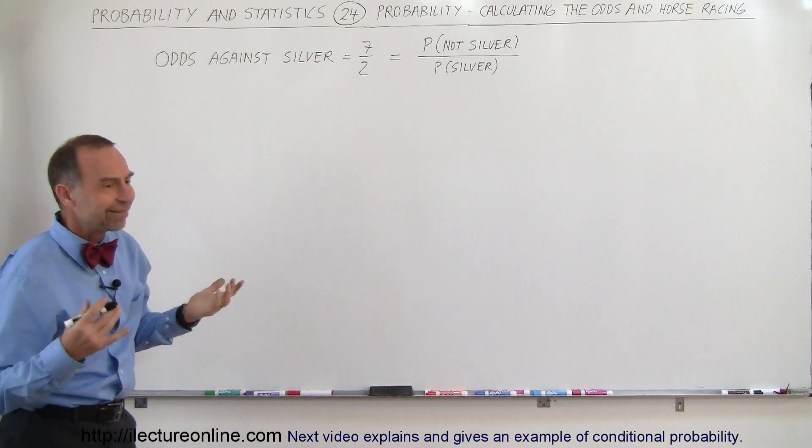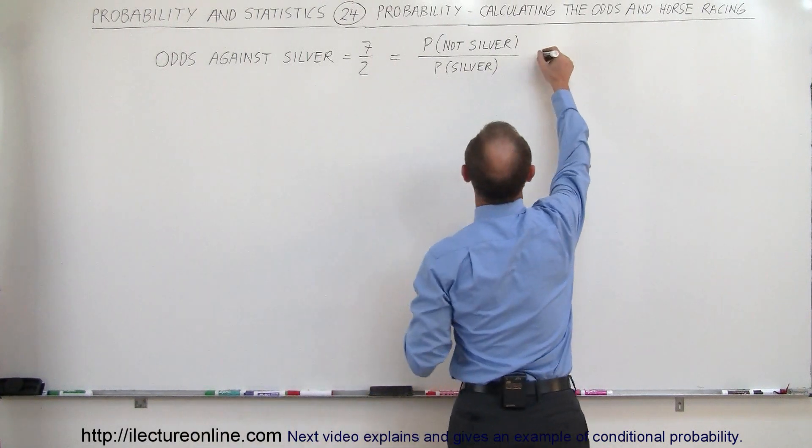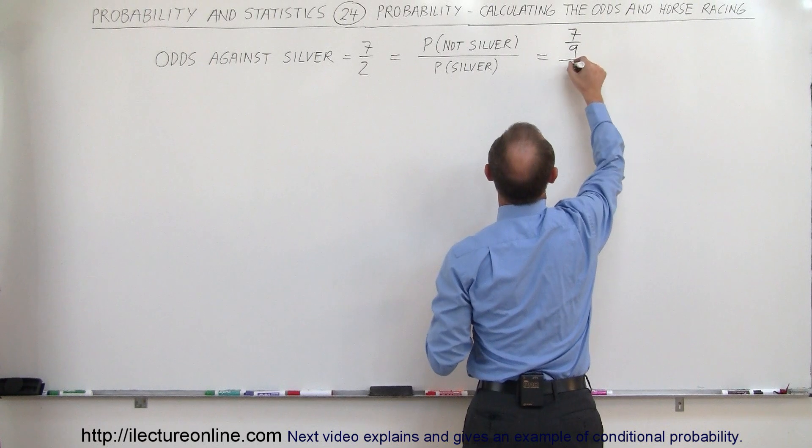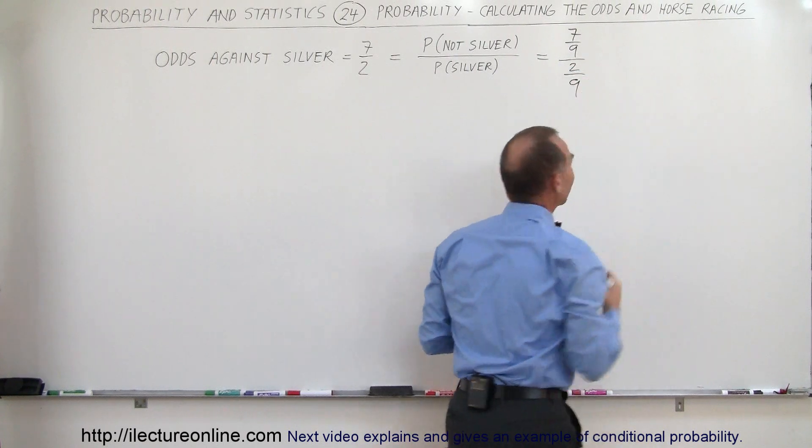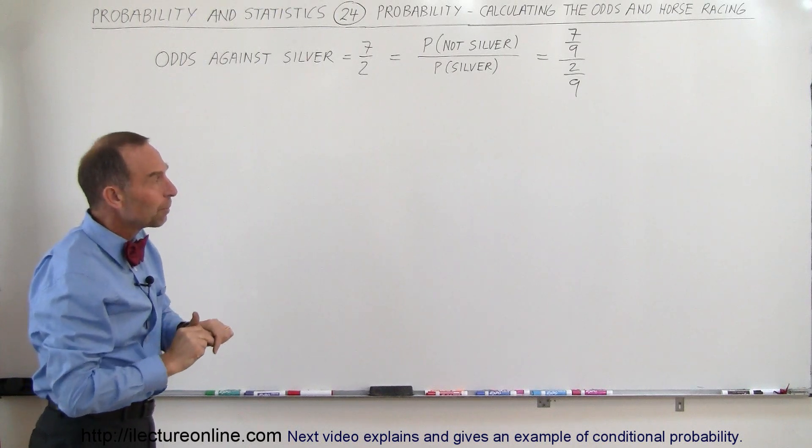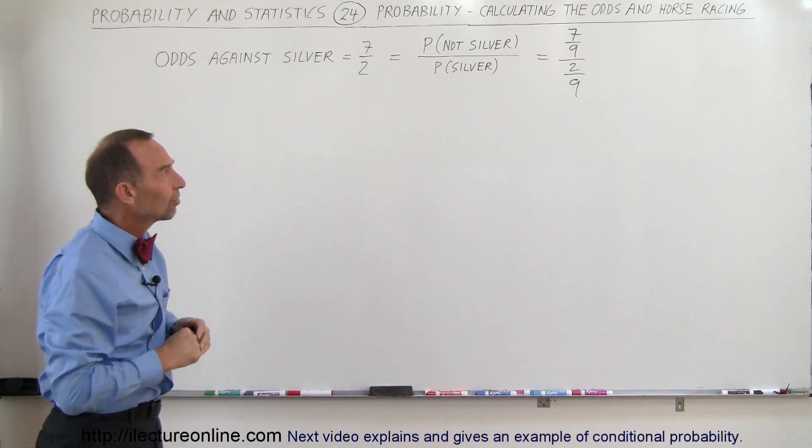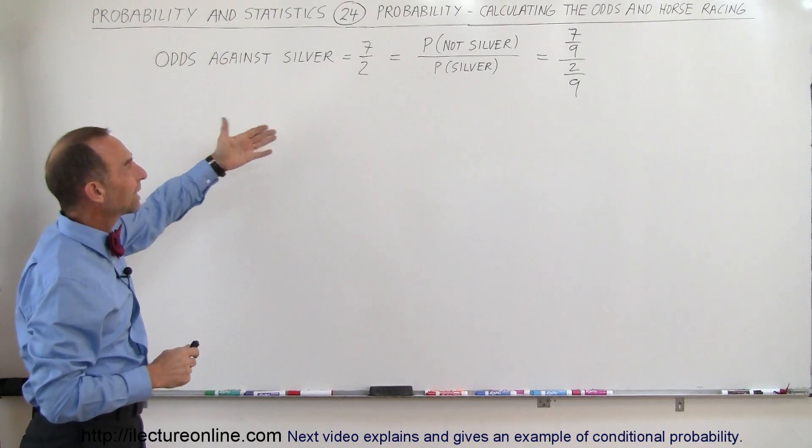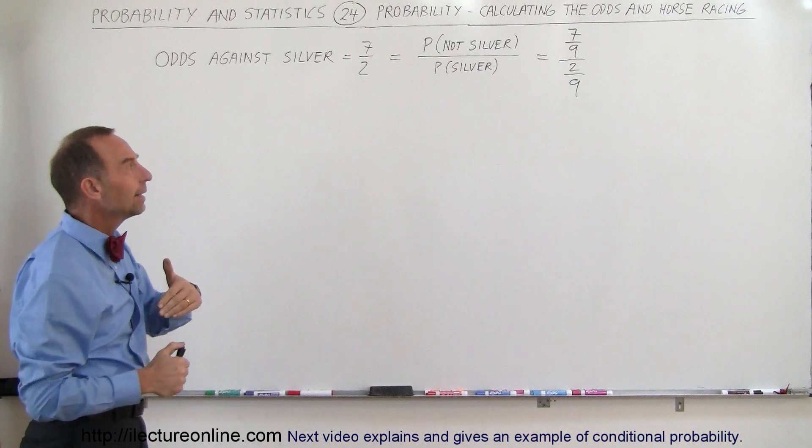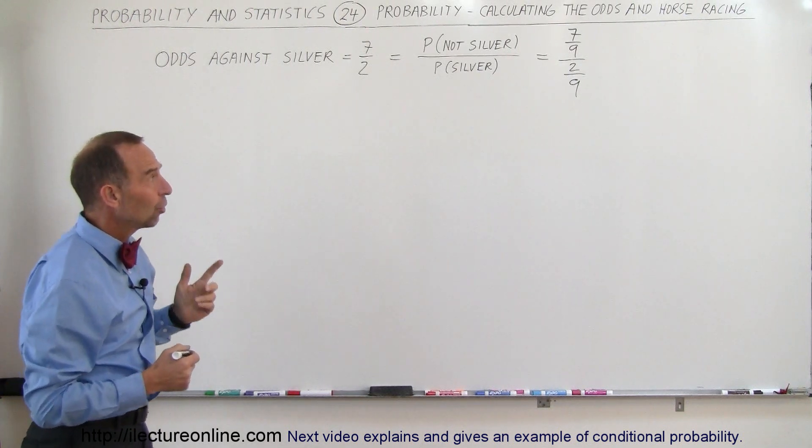Alright, so let's say that there's two possibilities, two horses, and so that means the probability would be 7/9 divided by 2/9. So it could be of course if there's more horses the bottom number will become bigger, but let's say there's two horses, one that's Silver, one that's not Silver, so the odds against Silver are 7 to 2, which means the probability is 7/9 versus 2/9 that Silver will win.